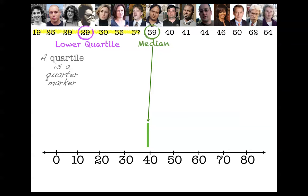Maybe that helps, maybe that doesn't. But I think you can visually see where the lower quartile is, because it splits the lower half into two halves. What am I going to do with the lower quartile? I'm going to mark a spot on my number line at 29 for my lower quartile, just like I marked a spot at 39 for my median. And guess what? We're not done.